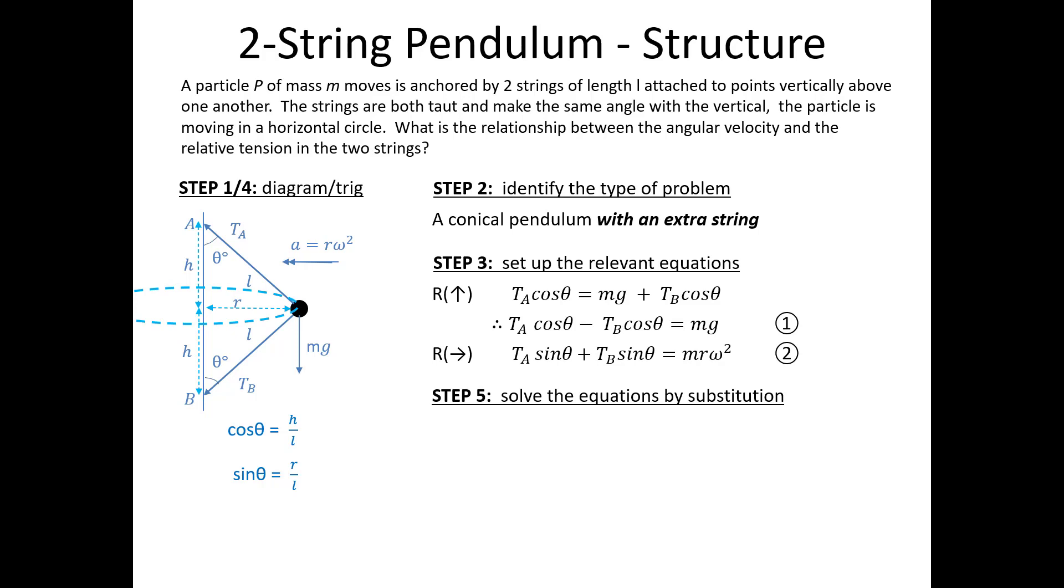I'm going to solve them using substitution. So the first thing I'm going to do is rearrange my first equation, substituting in what I know cos θ to be, and I get that quite simple equation, TA minus TB equals that. I then substitute my sine θ value into equation two, and now I get TA plus TB equals that. It's now quite simple to eliminate one or other tension by either adding or subtracting those two equations. When I add them, I get TA out of the whole thing. When I subtract them, I get TB.